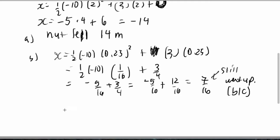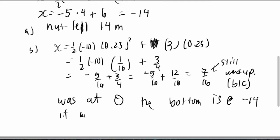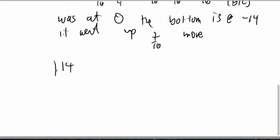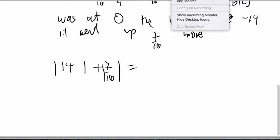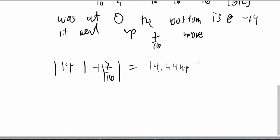So what does this mean? The distance it fell, so in other words, it was at 0. The bottom is at negative 14. It went up 7 sixteenths more. So the total distance is going to be 14 plus 7 over 16. When I actually work out that math, it's going to be 14.44 meters. Let me put this out there.